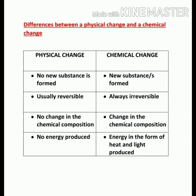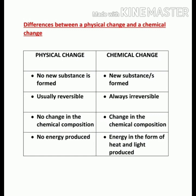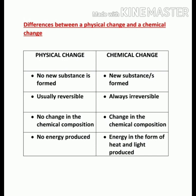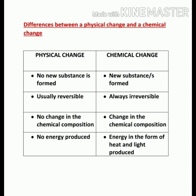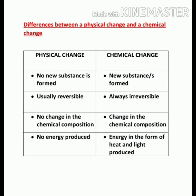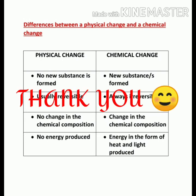In a physical change, since no new substance is being formed, there is no change in the chemical composition, and no energy is produced. Whereas in a chemical change, since new substances are formed, there is always a change in chemical composition, and there is always a production of energy in the form of heat or light.